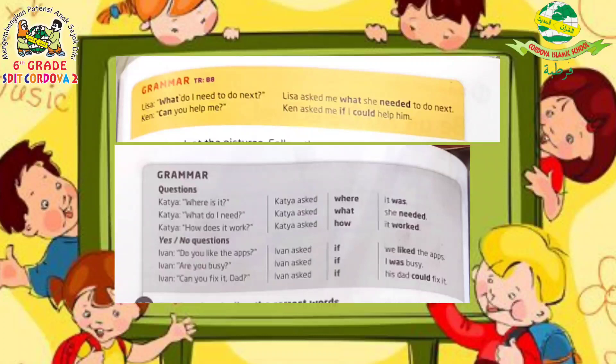Now let's try the grammar examples from the workbook. Katya asked: 'Where is it?' The embedded form becomes: 'Katya asked where it was.' In the original question, the to-be comes before the subject — 'where is it' — but when we change it to an embedded question, the position is reversed: subject first, then to-be. And the to-be is also changed to its past form (second form).